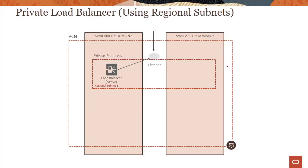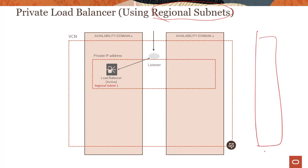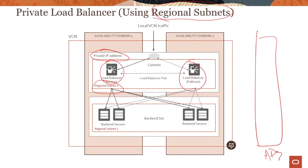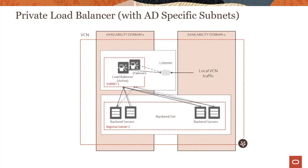Let's see how this works in action. I'm using regional subnets here. I have a region — multi-AD regions have three ADs, but I'm only showing two to keep the picture cleaner. I can create a private load balancer in AD1, and since it's a regional subnet the failover gets created in AD2. Like the public load balancer, you can send traffic to backends in whichever ADs they exist.